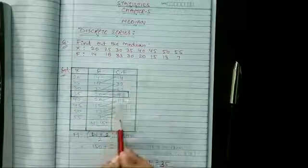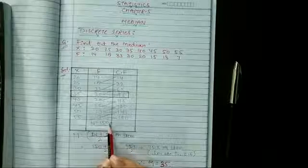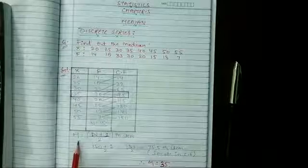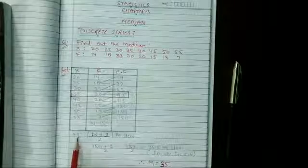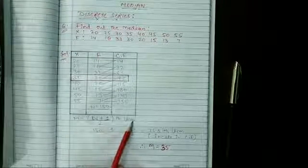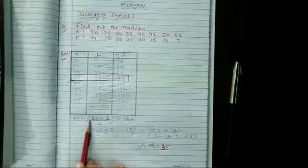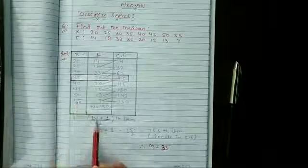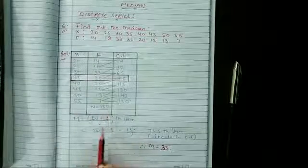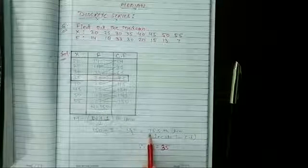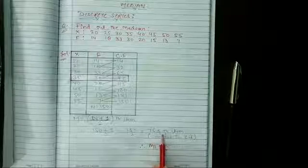Here N means the total of frequency means 150. 150 plus 1 upon 2, 151 upon 2th item means 75.5th item.